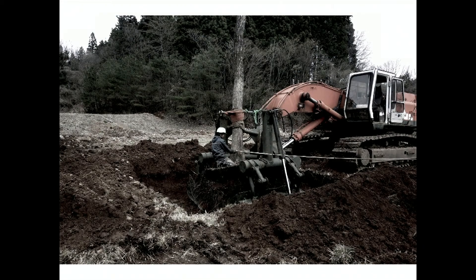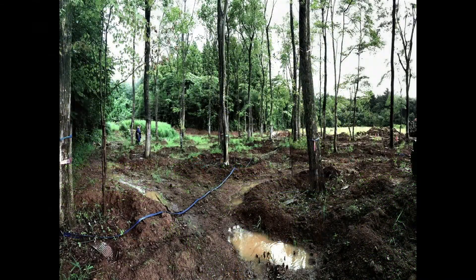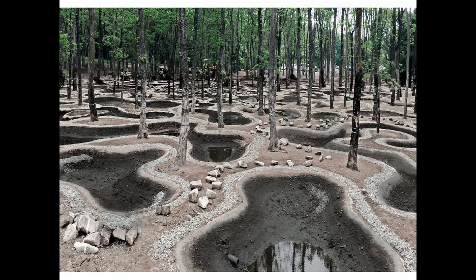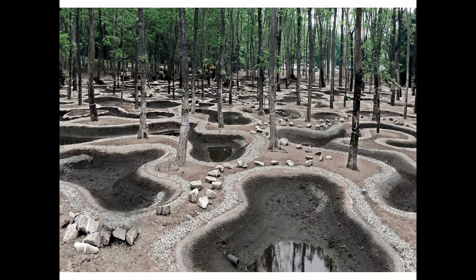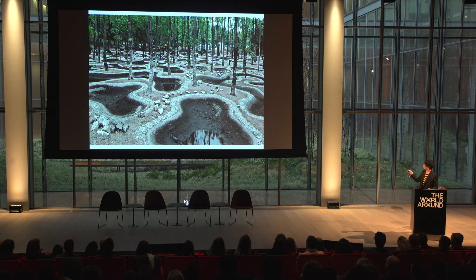We move each tree to its decided position one by one. This is a photograph from the time we started moving the trees. We will create countless ponds between the trees. This is a photograph before pouring water into each pond. Each pond is waterproofed, so plants that do not normally grow near water can coexist with water and trees. The ponds are connected by pipes, so water flows from the neighboring river, through the ponds, and back to the river — the same system as a rice field.